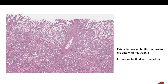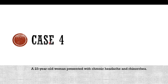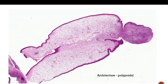Our next case is a 23-year-old woman presented with chronic headache and rhinorrhea. On examination of the nasal area, there is a polypoidal structure. Our ENT colleague will usually remove the polyp and send it for histopathological examination.